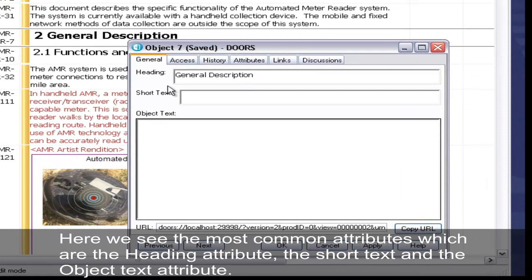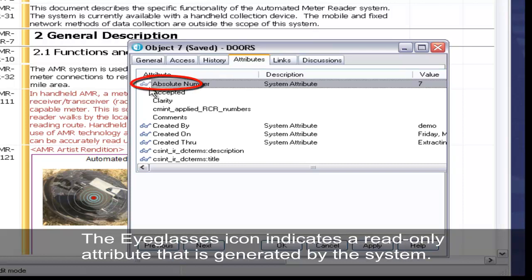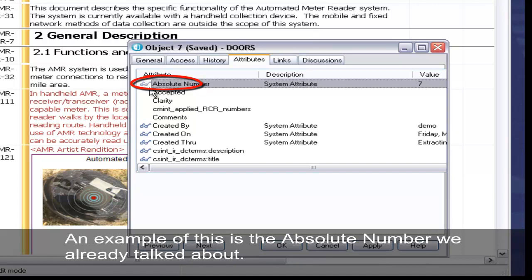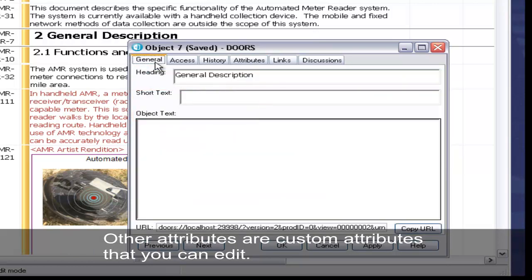Here we see the most common attributes, which are the heading, short text, and object text attributes. In the Attributes tab, we see lots of different attributes. The eyeglasses icon indicates a read-only attribute that is generated by the system. An example of this is the absolute number we already talked about. Other attributes are custom attributes that you can edit.